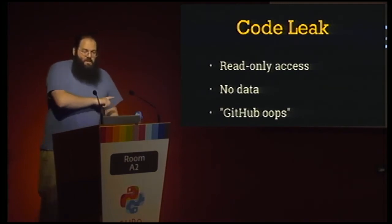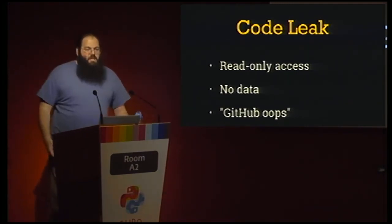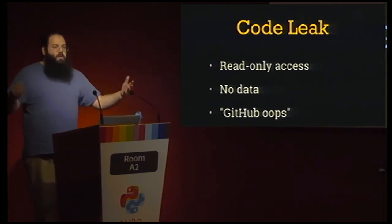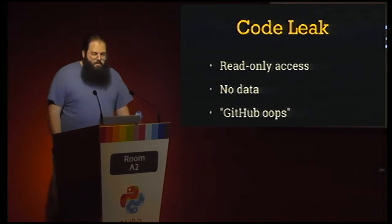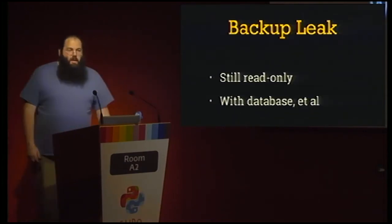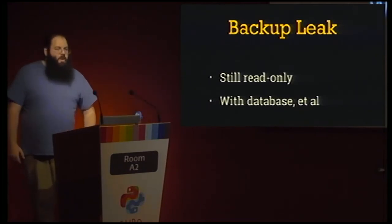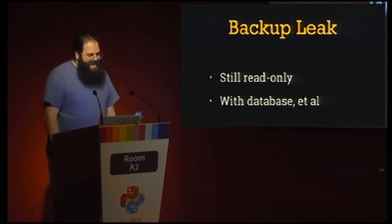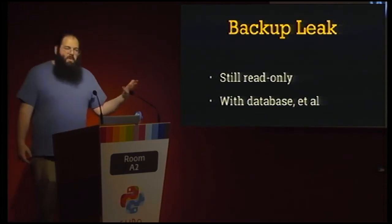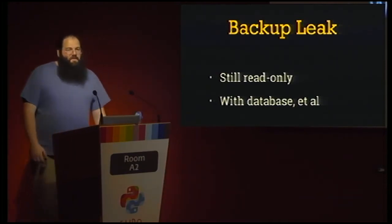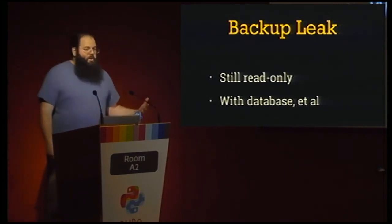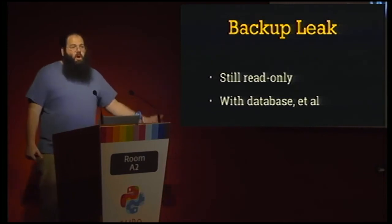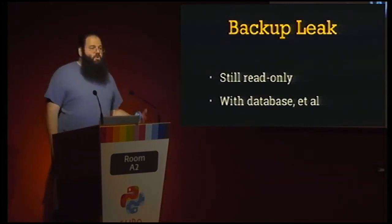Next, code leaks. For infrastructure and security, a code leak shouldn't be a problem — security through obscurity isn't real security, and hopefully no one is hard-coding passwords in their web apps. Backup leaks are more serious — like the Instagram hack where a backup file was uploaded to S3 and forgotten about. This is usually a superset of a code leak, also including config files or database dumps. Best practice: constantly audit your backup system, understand what data is in there, and be careful to exclude sensitive things. Storing things only in RAM makes it harder to accidentally catch them in a backup.